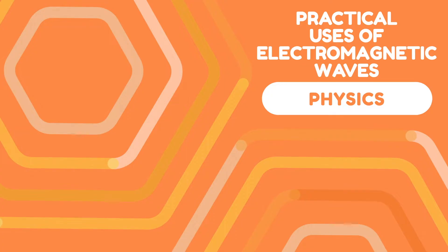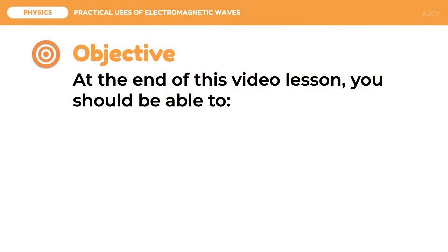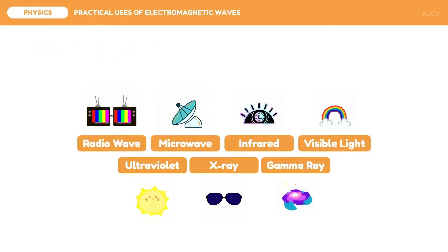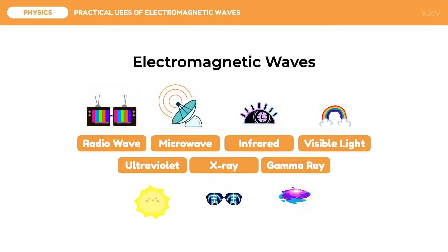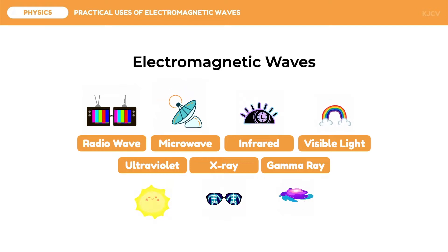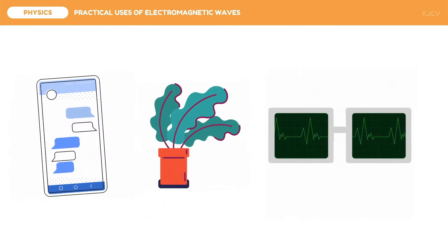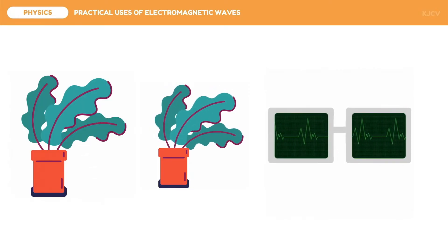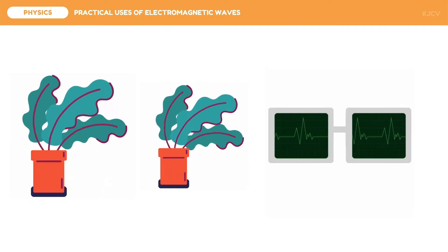In this lesson we are going to discuss the practical uses of electromagnetic waves. At the end of this lesson you should be able to explain the common functions of electromagnetic waves and how these improve our way of life. We have previously discussed the seven types of electromagnetic waves. In this discussion we are going to focus on their uses in technology, nature, and health.